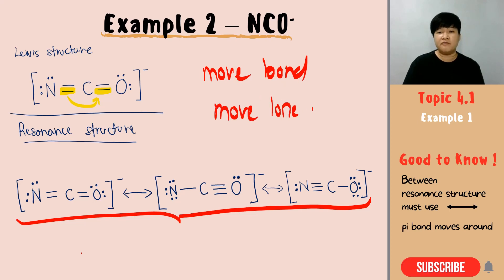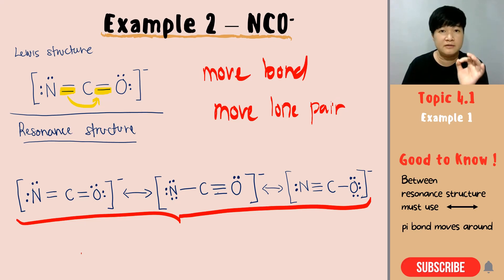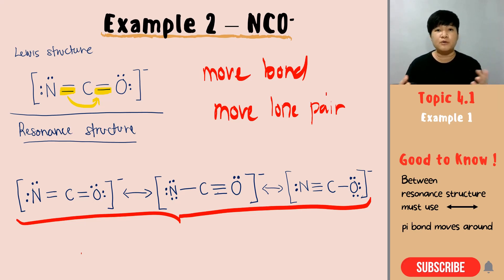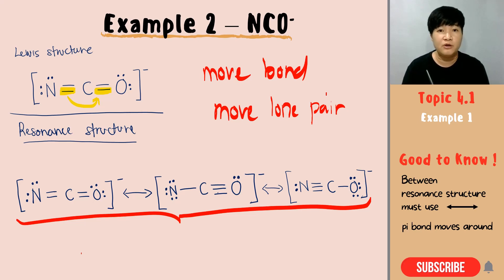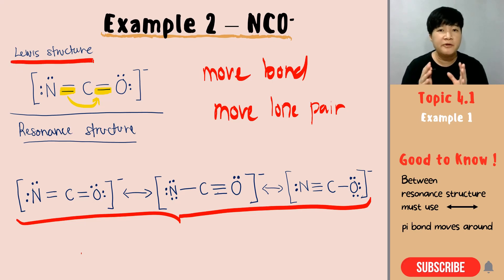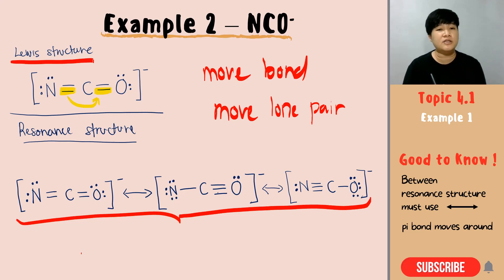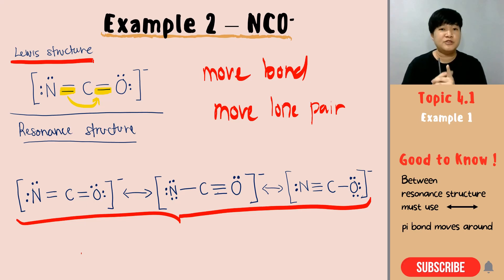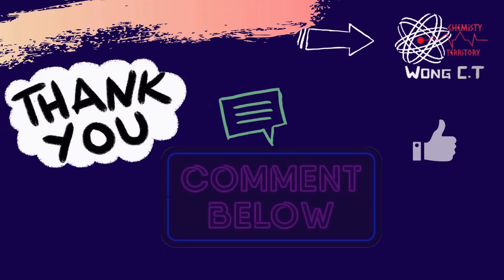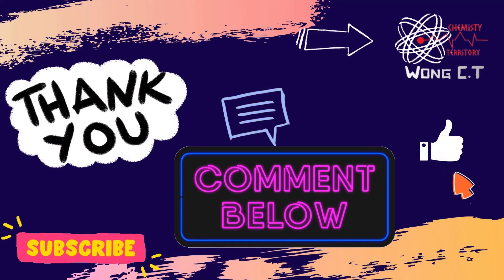So this is the correct resonance structure for NCO⁻. Make sure your lone pair and bond are correct and achieving octet. And that's it about resonance structure — simple and easy, with one condition: you must be very good at drawing your Lewis structure before you proceed to resonance structure. If you have any questions, drop them in the comments below. Make sure you like the video and subscribe to the channel for more videos. Thank you for watching and I'll see you in the next video.